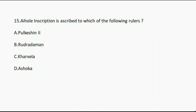Question number fifteen: The Aihole inscription is ascribed to which of the following rulers? Option A: Pulakeshin II. Option B: Rudradaman. Option C: Kharavela. Option D: Ashoka. And the correct answer is option A, Pulakeshin II.